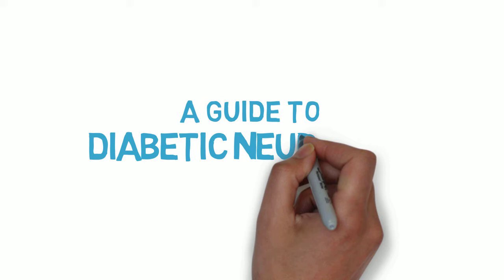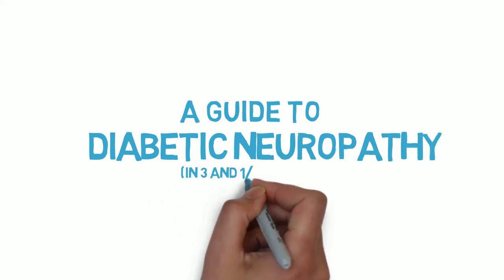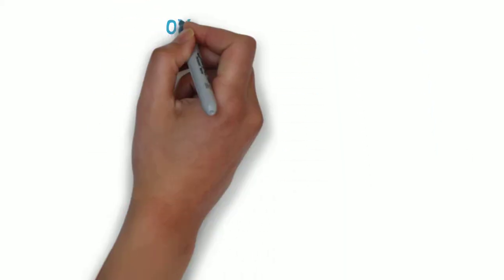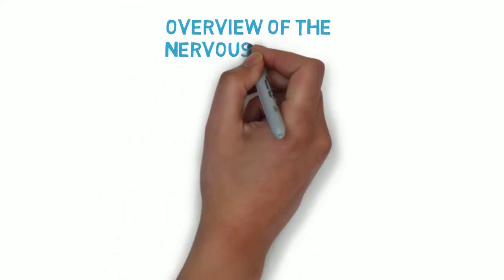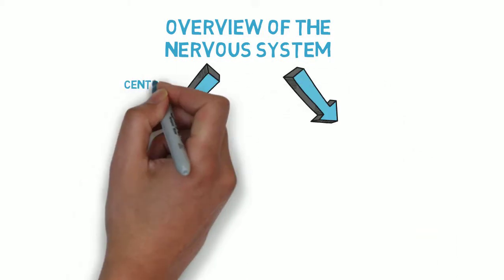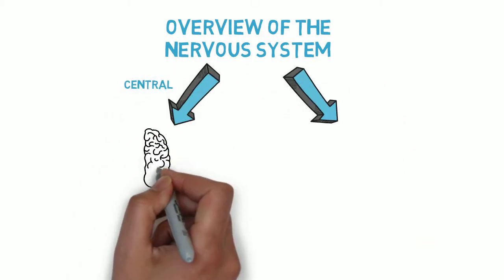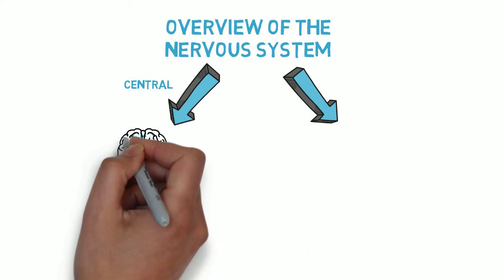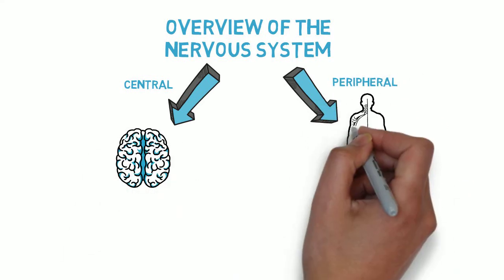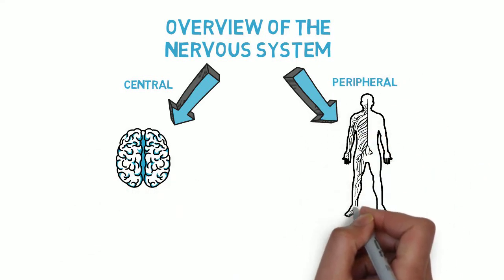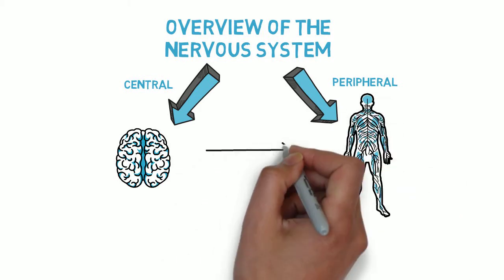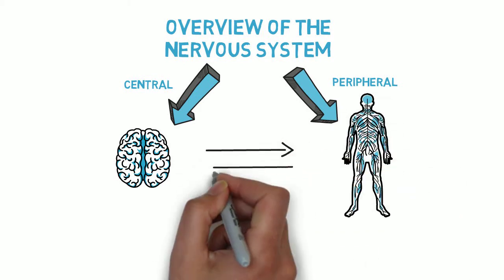A guide to diabetic neuropathy in three and a half minutes. The nervous system consists of two main branches: the central nervous system, which is the brain and the spinal cord, and the peripheral nervous system, which contains the nerves in the rest of the body. Its main role is to transmit signals from the brain to the body and vice versa.